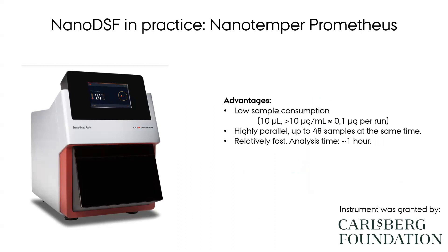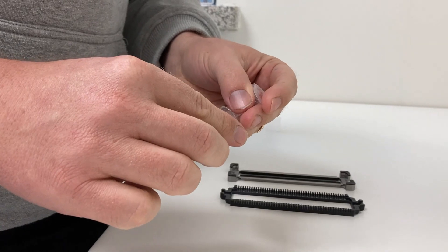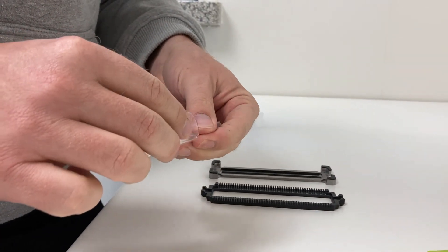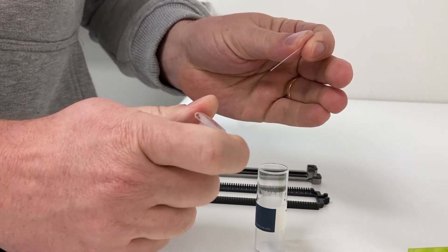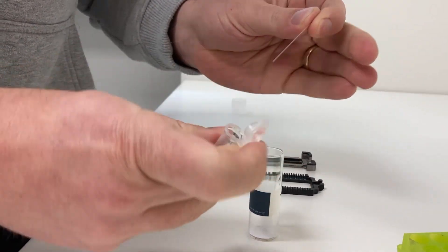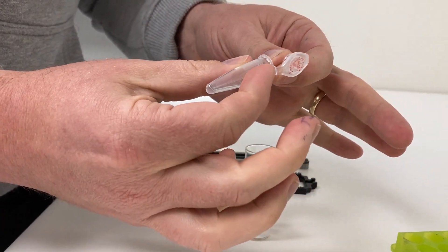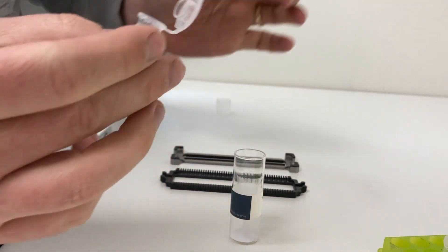In practice, we are going to do our measurements using an instrument called the Nanotemper Prometheus. This instrument has many advantages. One of the most important ones is that it works with really low amounts of sample — around 10 microliters of sample down to a concentration of 10 micrograms per milliliter, meaning you are in the micro- to nanogram range per run. Samples are loaded into a microcapillary, which is a thin glass tube. The sample is loaded simply by sticking the end of the capillary into the solution, and the capillary force will suck your sample into the tube.